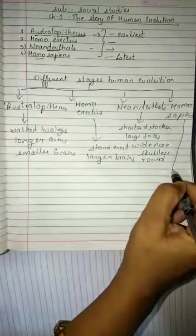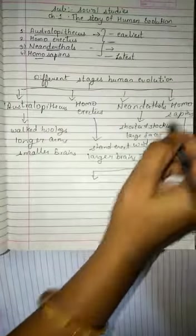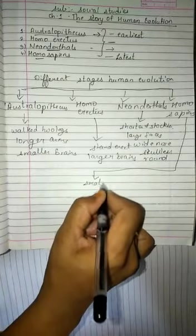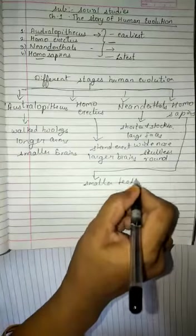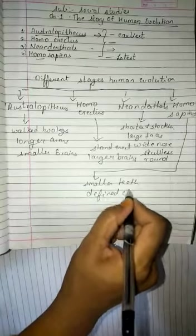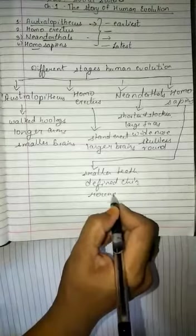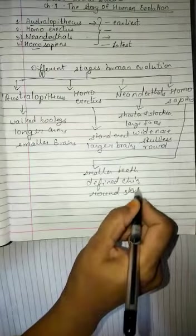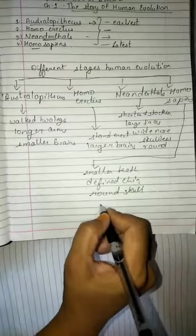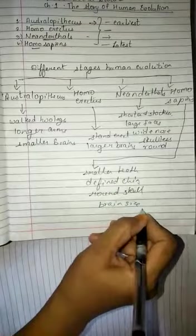We will see the Homo sapiens now. Homo sapiens had smaller teeth, the shape of the chin was defined with a proper shape, and the shape of the skull was also round with an increase in brain size.